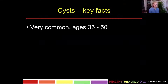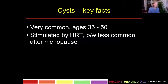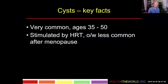The key facts about cysts are that we see them generally in the age period of roughly 35 to 50. After menopause, cystic disease tends to slow down. On the other hand, if a woman has hormone replacement therapy after menopause, it may cause some cystic changes. Other than that, it's less common in that age group.